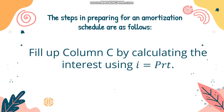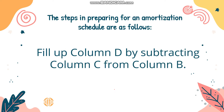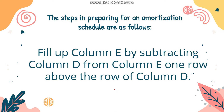After that, fill up column C by calculating the interest using I equals PRT, identifying the previous outstanding principal to determine the interest. Then fill up column D by subtracting column C from column B — that is, subtracting the interest from the periodic payment. The result goes into column D. Then subtract the value in column D from column E so that we can identify how much the remaining outstanding principal will be.